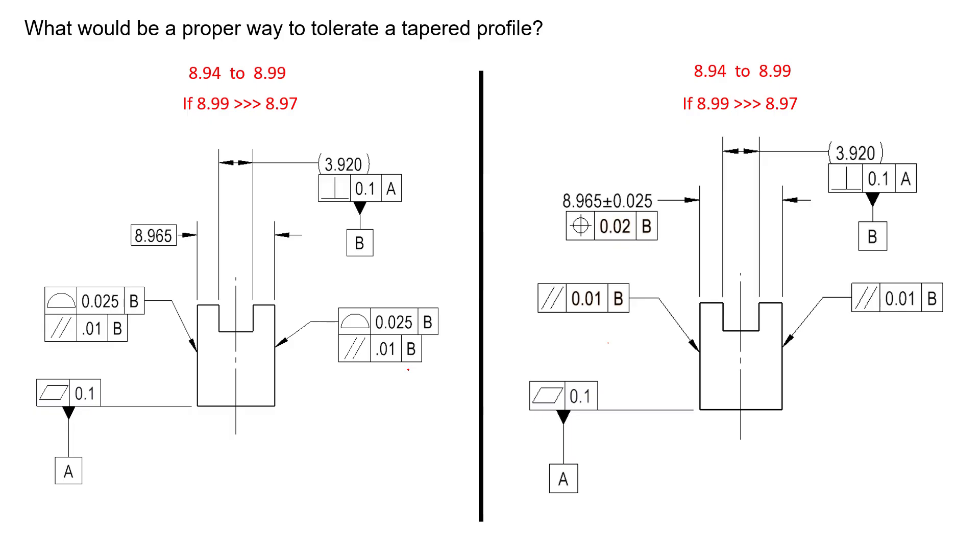The first one I'm going to outline is on the right. We have a size dimension controlling the overall size of this width feature to 8.965 plus or minus 25 microns. If you do the math, that equates to 8.94 to 8.99. We are controlling the overall size, so if we had some level of taper, we could go from 8.99 at the top down to 8.94 at the bottom.